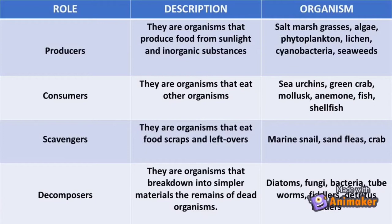Consumers are organisms that eat other organisms. Examples: sea urchins, green crab, mollusk, anemone, fish, and shellfish. Scavengers are organisms that eat food scraps and leftovers. Examples: marine snail, sand clams, and crab. Decomposers are organisms that break down into simpler materials the remains of dead organisms. Examples: diatoms, fungi, bacteria, tube worms, fiddlers, and detritus feeders.